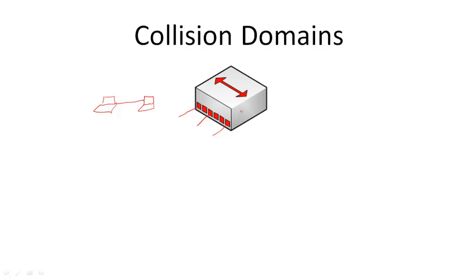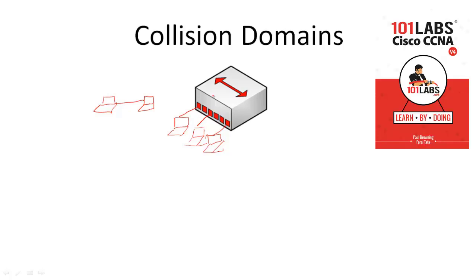The problem with the hub is that it is a single collision domain. When the first device is trying to send a message to the second device and the second device is trying to send a message to the third device at the same time, they can experience a collision. So regardless of the number of devices connected to the hub, you have to send messages one after the other, otherwise you will experience a collision.